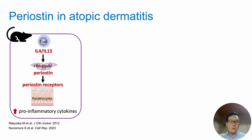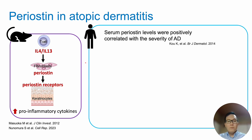Previous research on mice have shown that IL-4 and signaling from T cells will target fibroblasts and induce the production of berostin, which acts on berostin receptors in keratinocytes and increases the pro-inflammatory cytokines. In humans, serum berostin levels were positively correlated with the severity of AD.